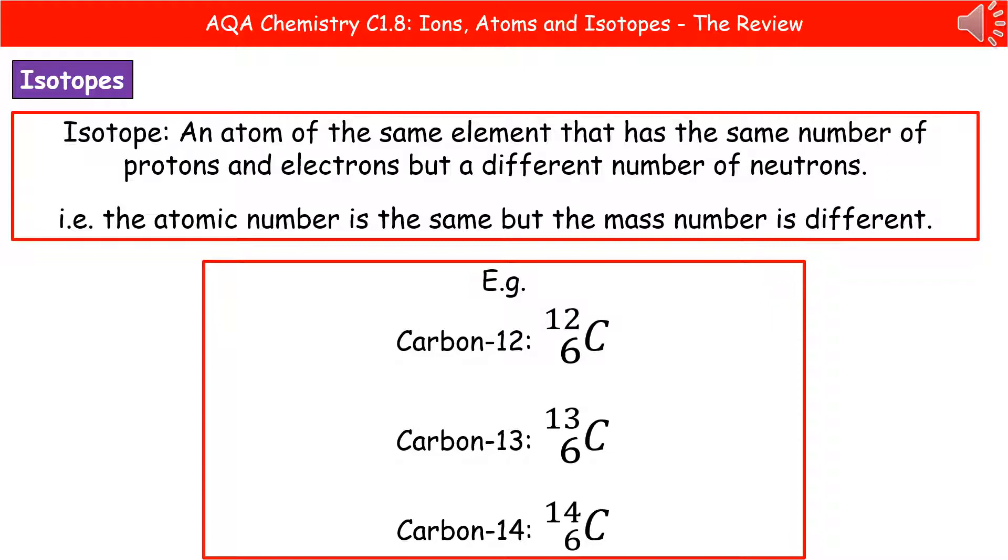The next thing is the isotope. So we need to learn the definition for an isotope first of all. And the definition you need to remember is it's an atom of the same element that has the same number of protons and electrons, but a different number of neutrons. So what we actually remember it as is that the atomic number is the same, but the mass number is different. Because remember, the mass number is the protons plus the neutrons, and therefore the neutrons is the thing that's changing.